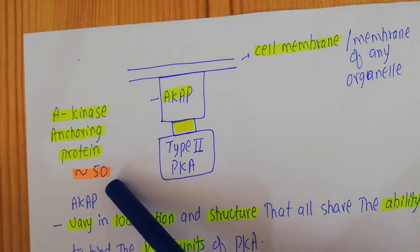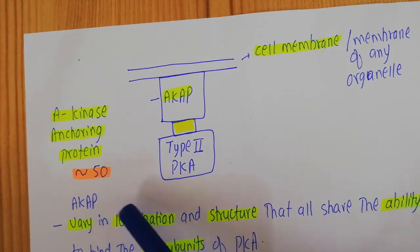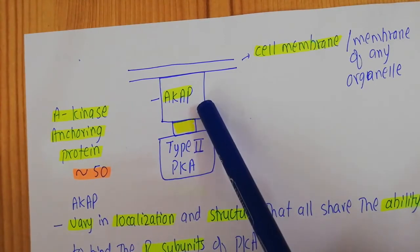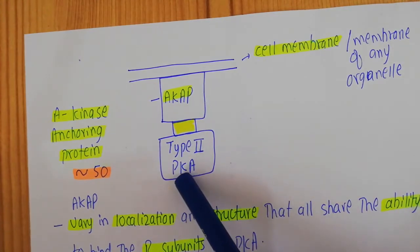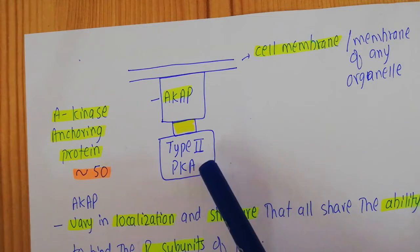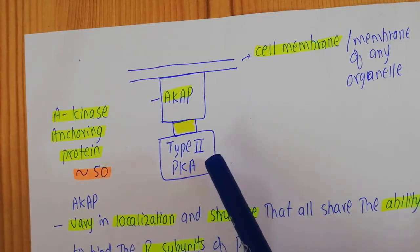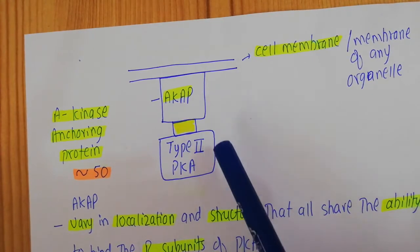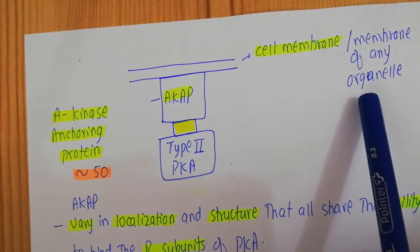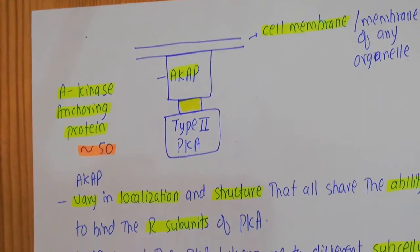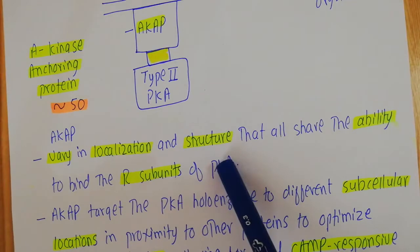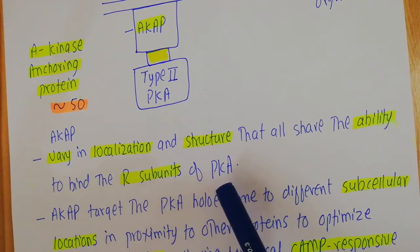In humans there are nearly 50 different types of AKAPs. As mentioned in the last video, the regulatory subunits use their docking and dimerization domain for attachment to the AKAP. The type 2 protein kinase A regulatory subunits utilize their docking and dimerization domain to interact with the AKAP, and are thus indirectly attached to the cell membrane or organelle membrane. AKAPs vary in localization and structure but all share the ability to bind the regulatory subunits of protein kinase A.